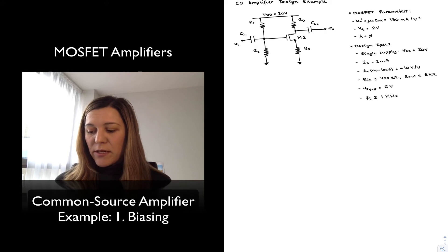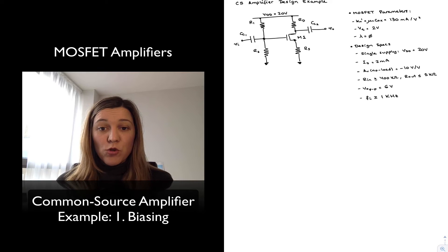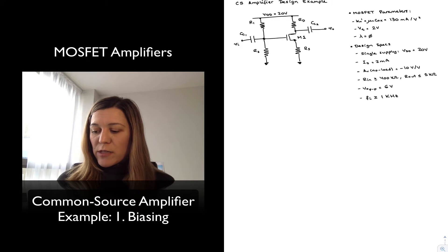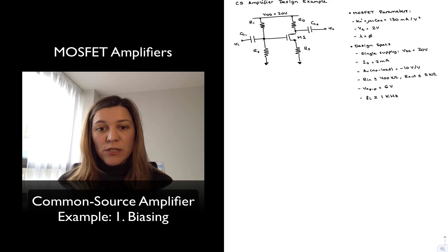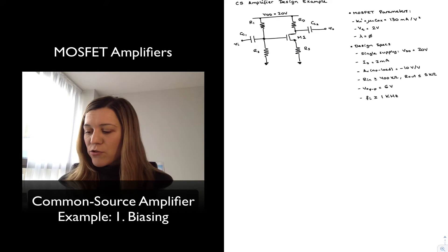I have drawn my circuit. Notice that I have my common source amplifier comprising a transistor M1 and a biasing network, a four resistor biasing network. Notice that I also have a source degeneration resistor in there.